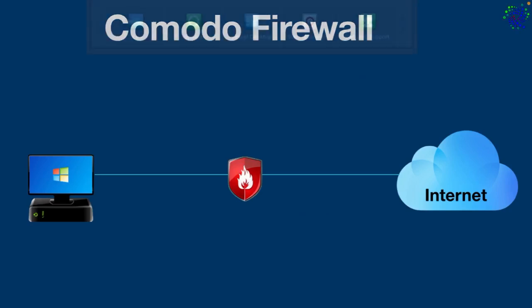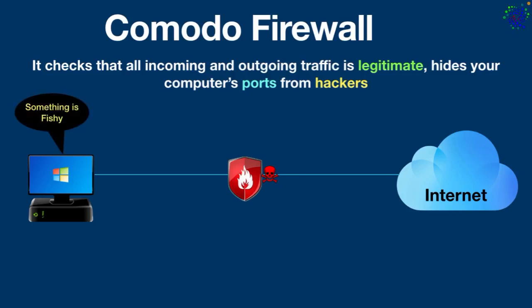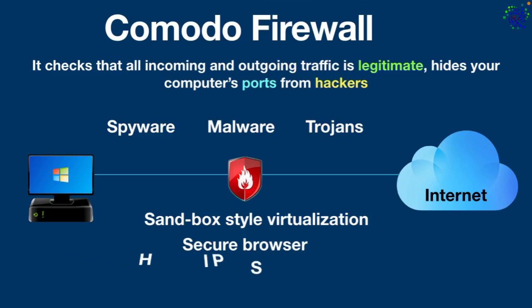Number two: Comodo Firewall. Comodo checks that all incoming and outgoing traffic is legitimate, hides your computer's ports from hackers, and blocks malicious software from broadcasting your private data. If any suspicious activity appears, it will warn you immediately. Comodo Firewall offers business-grade security against online threats like spyware, malware, and trojans. In addition to basic functions, it includes sandbox-style virtualization, a secure browser, and a Host Intrusion Prevention System (HIPS) that detects suspicious program behavior and asks you whether to allow or block it.